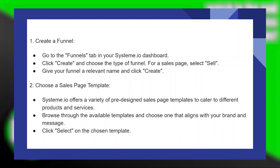After that, choose a sales page template. System.io offers a variety of pre-designed sales page templates to cater to different products and services. Browse the available templates and choose one that aligns with your brand and message. Click Select on the chosen template.